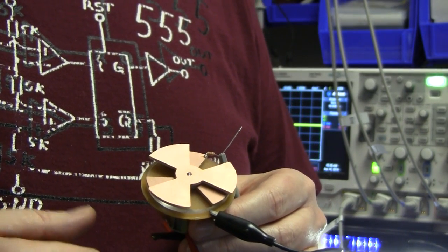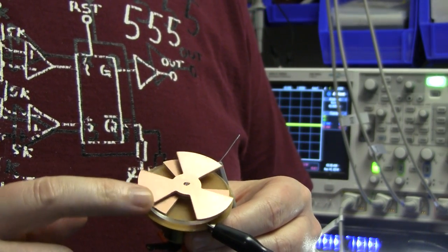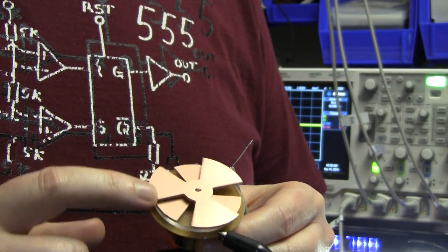So a field mill is a kind of electroscope basically. It measures static electric fields by mechanical commutation of the electrical field detecting sensor.